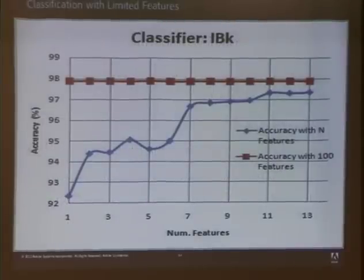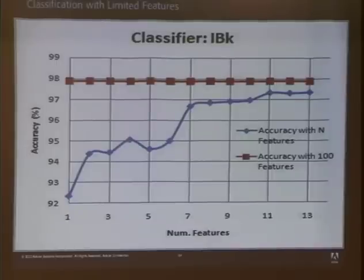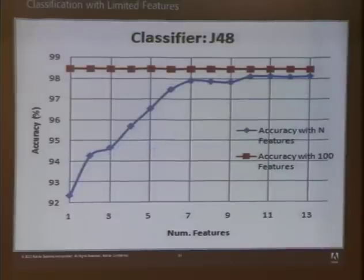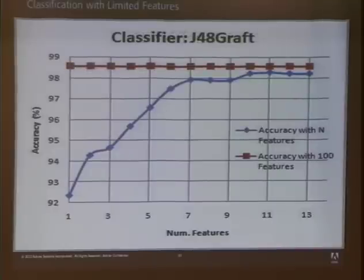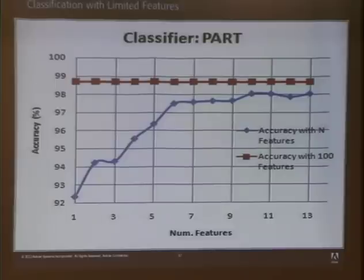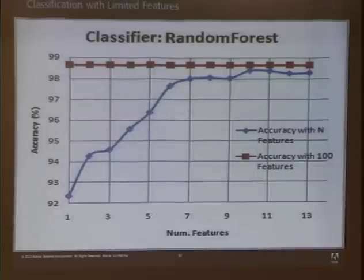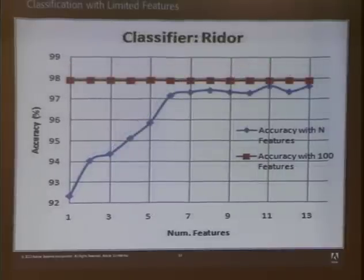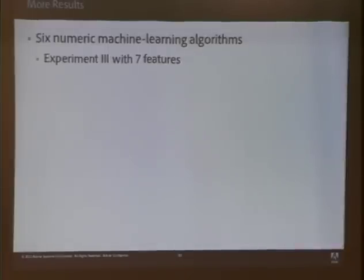Here are results from instance-based learning: after seven features there is a clear inflection point and the gain in accuracy is not as dramatic as the gain through the first seven features. The J48 classifier shows a similar inflection point at seven features. The PART classifier shows an inflection point at around six, but for consistency let's say seven. Similarly for Random Forest — all classifiers show the inflection point at seven features. I then took just those seven features as the sole inputs to the classifiers.